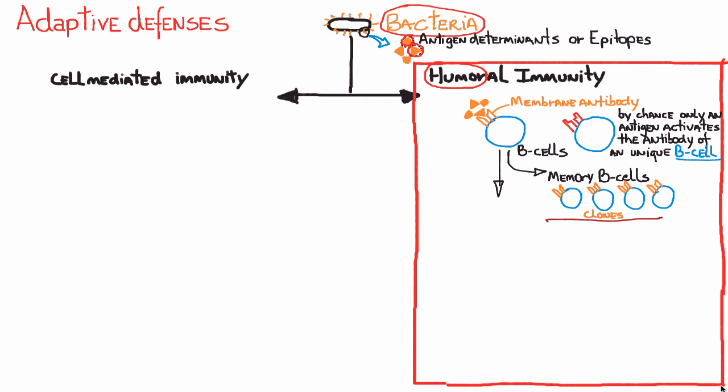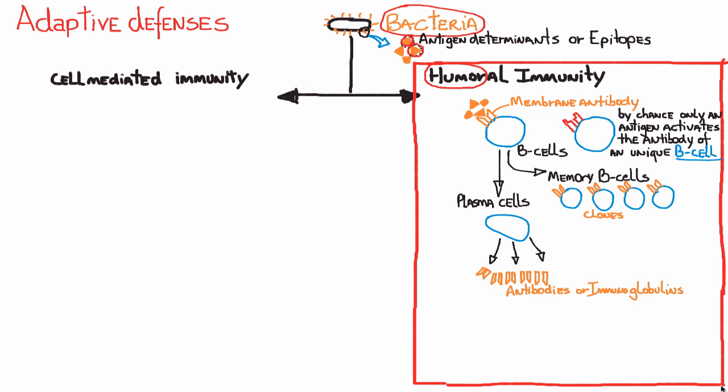That memory doesn't fight the current infection — it just gives you protection for a future one. To fight the current infection, the other route B cells can follow after activation is to become effector cells. In humoral immunity, these effector cells are called plasma cells. Once the membrane antibody is activated and the B cell differentiates into a plasma cell, it starts to produce millions and millions of antibodies, also known as immunoglobulins.